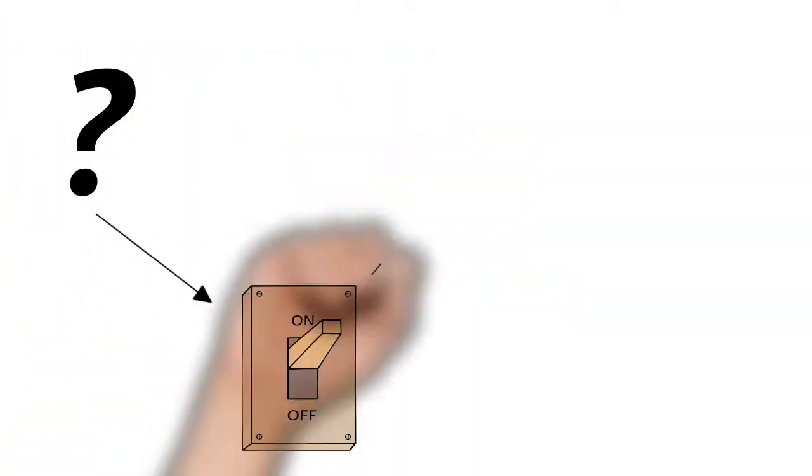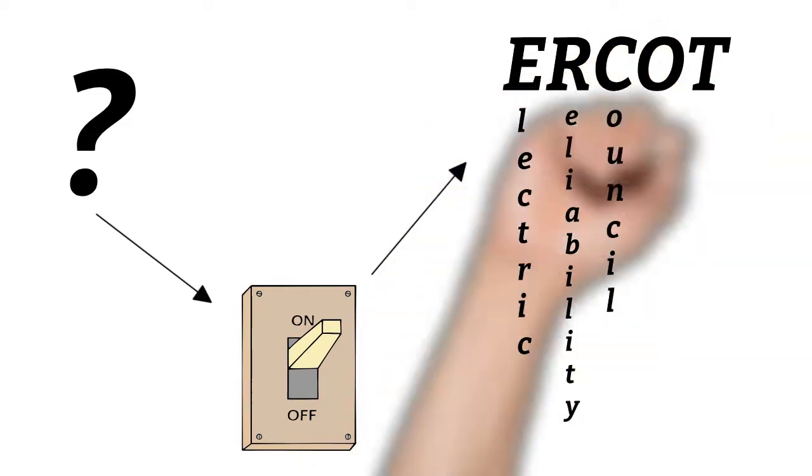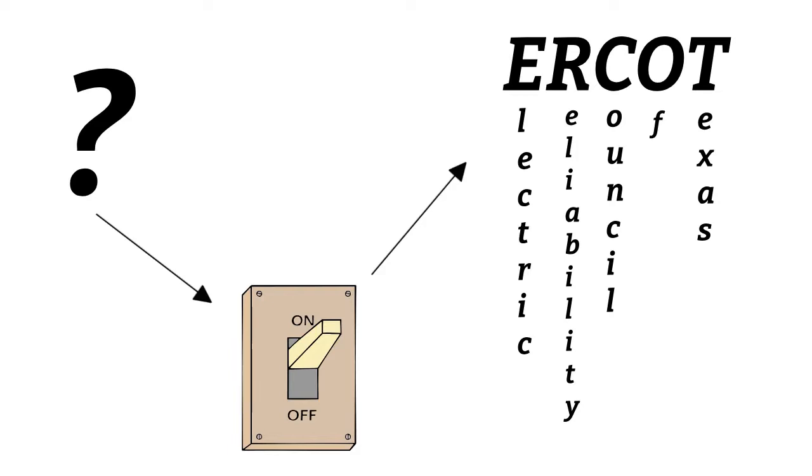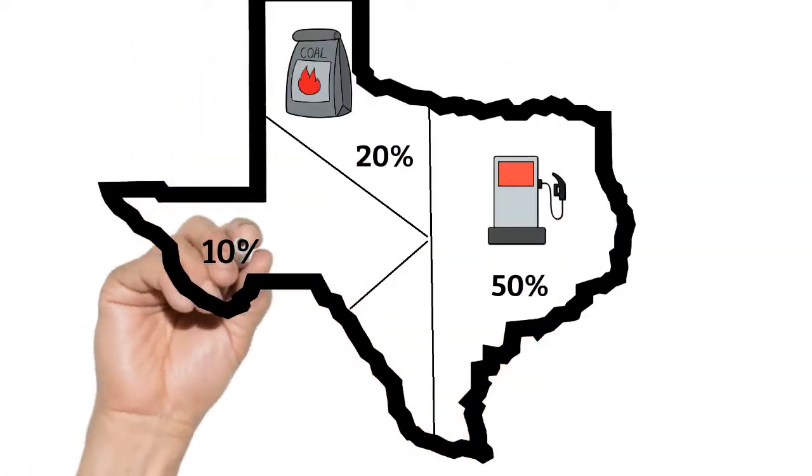To begin, let's understand where Texas gets its electrical power. According to ERCOT, which stands for the Electric Reliability Council of Texas, and is responsible for administering the state's electrical grid, Texas gets nearly half of its electricity from natural gas.